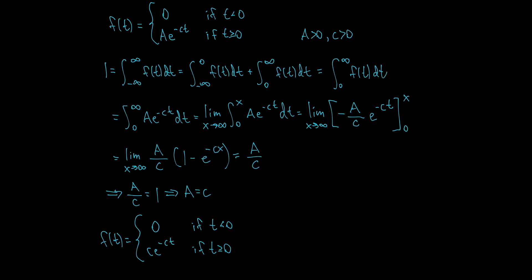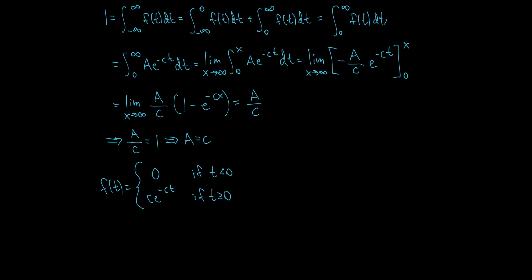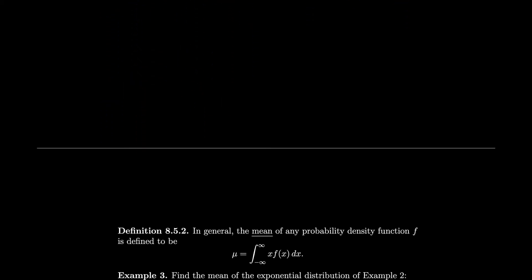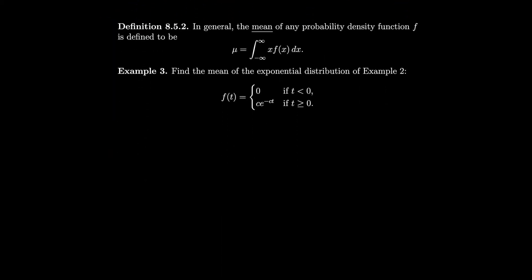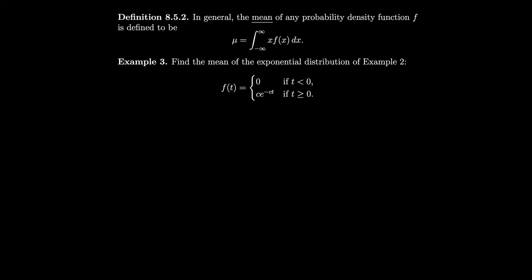We can do even better, but we need a new definition. In general, the mean of any probability density function f is defined to be mu, and it's the integral from minus infinity to infinity of x times f of x dx. So let's find the mean of the probability density function for this example.